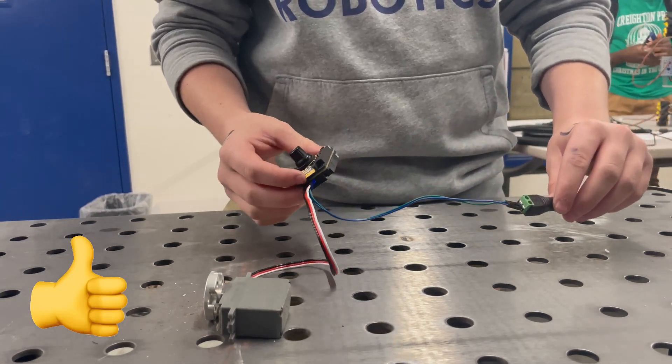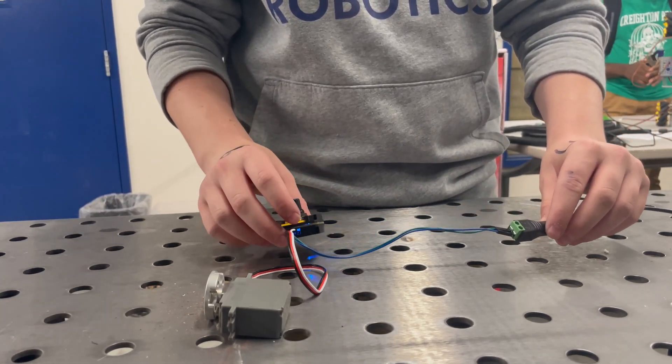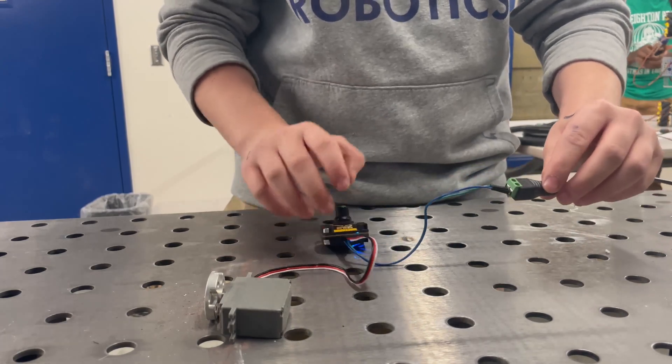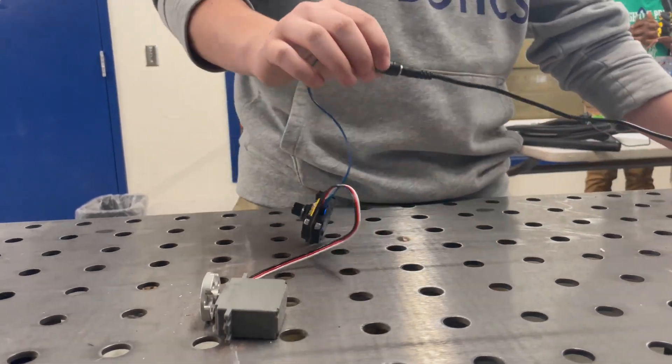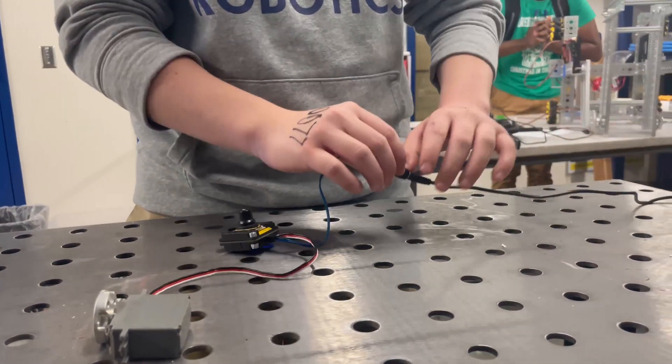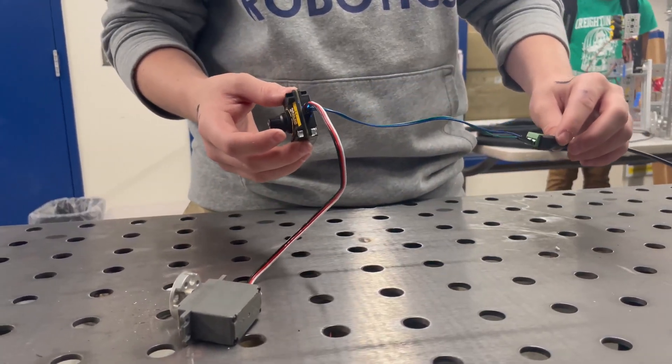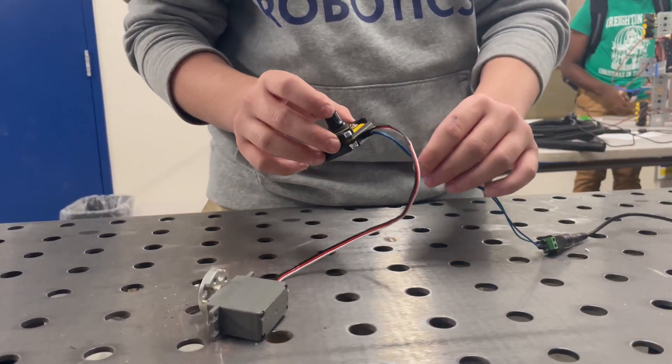Instead, what we decided to do, since we didn't have any 6-volt batteries laying around, we rigged up a little thing that plugs into the wall over here. It only gets about 4 to 5 volts, so this is really helpful.